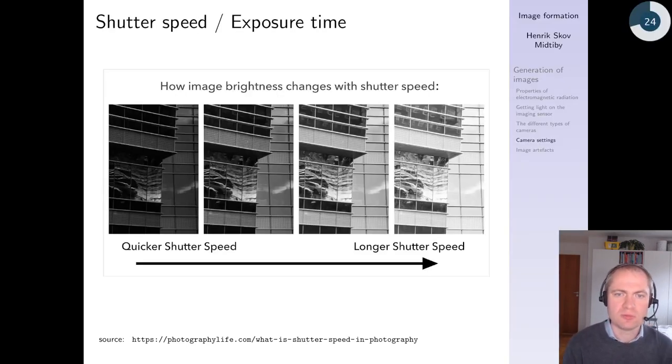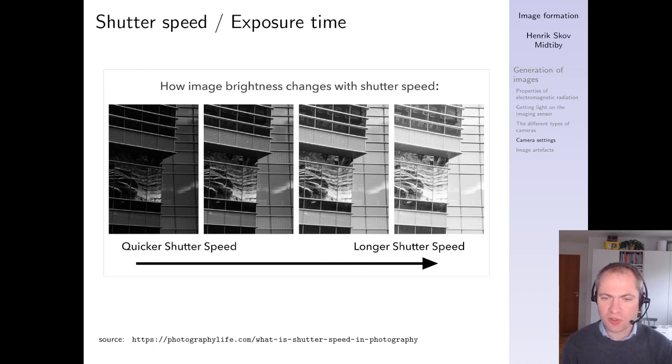The shutter speed is one way of controlling the amount of light that actually gets through to the system. The longer shutter speed you have, the more things can manage to move while you actually take the image. So if you have a fast moving object in the scene or the camera is wiggling or shaking a bit, then it will be problematic to use a long shutter speed.